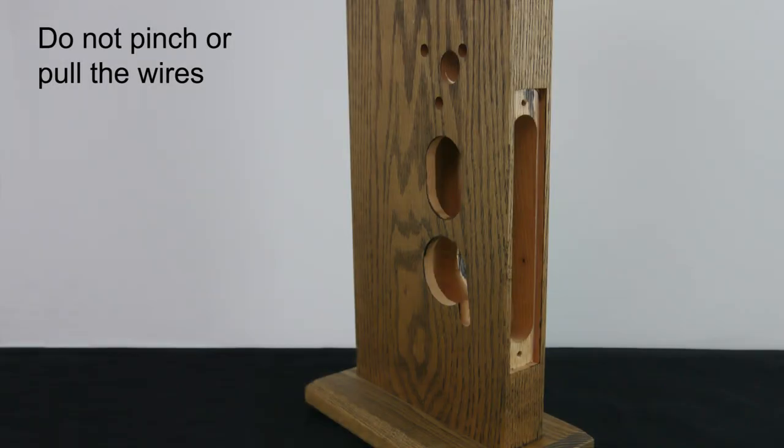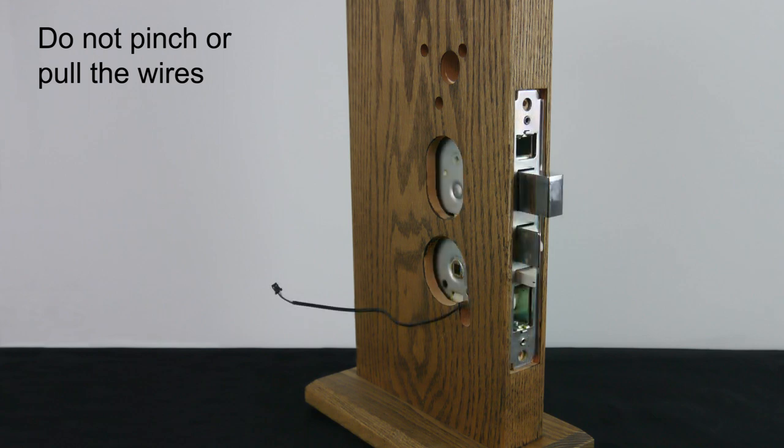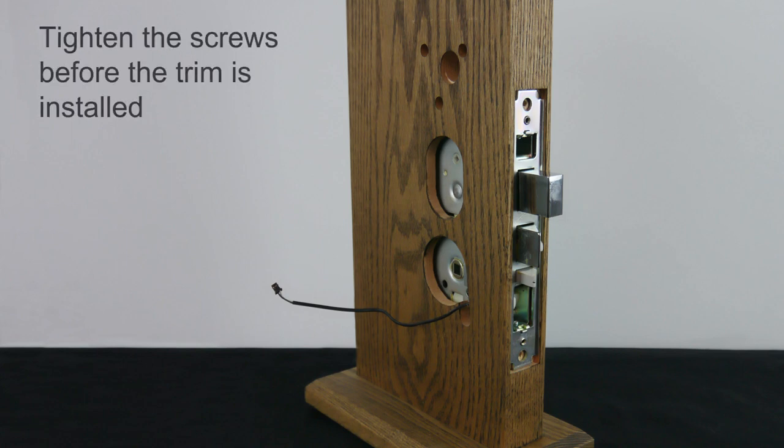Insert the mortise case into the door with the motor wire routed through the notch. Make sure the wires do not get pinched or pulled. Attach the mortise front plate to the door using the appropriate wood or machine screws.